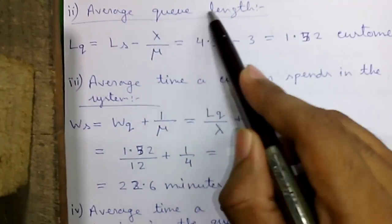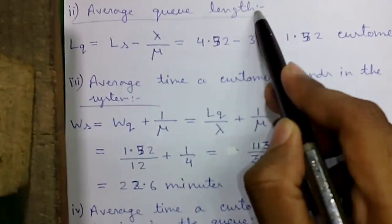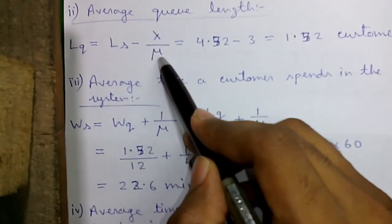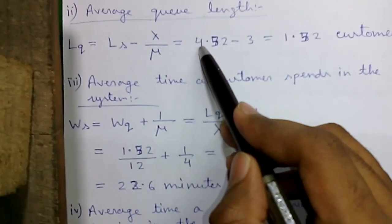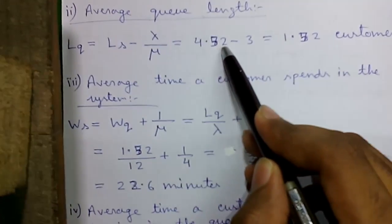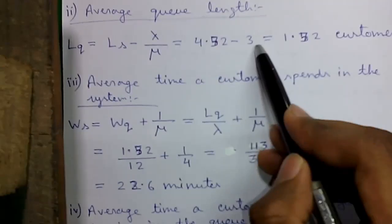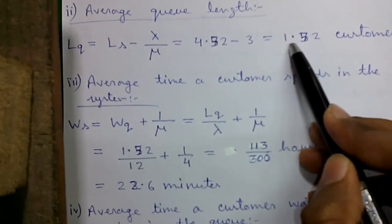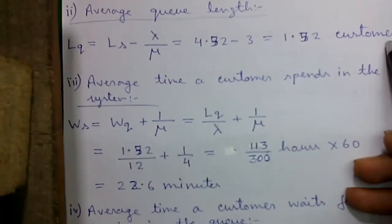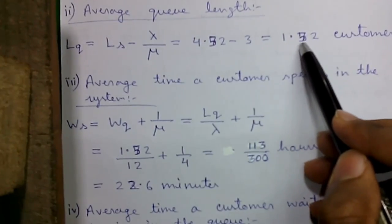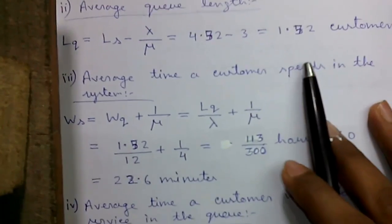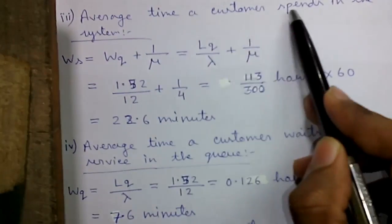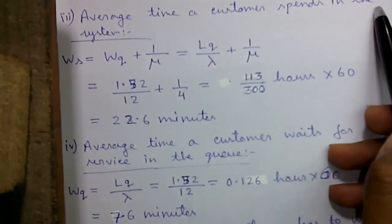Average queue length (Lq) = Ls − λ/μ = 4.52 − 3 = 1.52 customers. So on average there are 1.52 customers waiting in the queue.